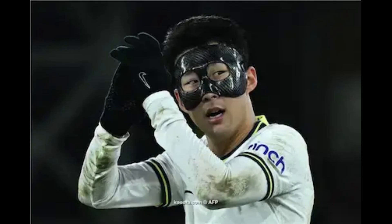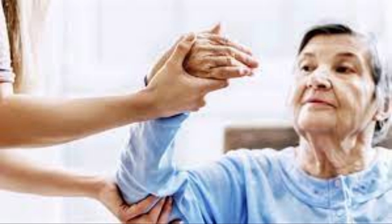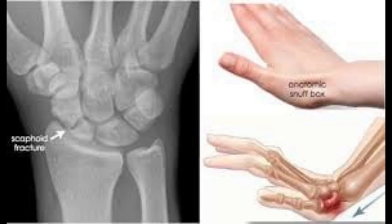Prevention and recovery: Being careful with sports activities and wearing appropriate protection can help reduce the risk of injury. After the splint is removed or the patient recovers from surgery, physical therapy sessions may be needed to restore wrist movement and strengthen the surrounding muscles. In conclusion, a scaphoid fracture is an injury that may seem simple but requires accurate diagnosis and treatment to ensure full recovery and prevent complications.